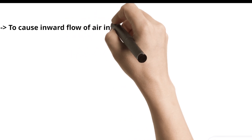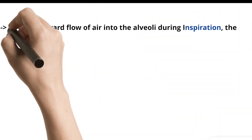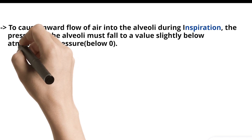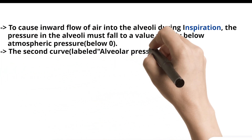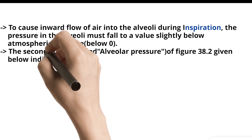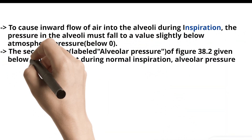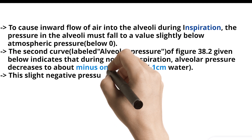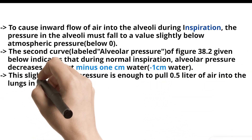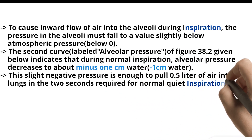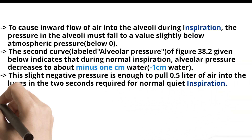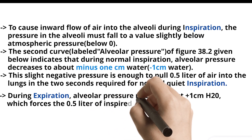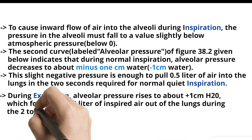To cause inward flow of air into the alveoli during inspiration, the pressure in the alveoli must fall to a value slightly below atmospheric pressure, below zero. As indicated by the alveolar pressure curve of figure 38.2, during normal inspiration, alveolar pressure decreases to about minus one centimeter water. This slight negative pressure is enough to pull 0.5 liter of air into the lungs in the two seconds required for normal quiet inspiration. During expiration, alveolar pressure rises to about plus one centimeter H2O, which forces the 0.5 liter of inspired air out of the lungs during the two to three seconds of expiration.